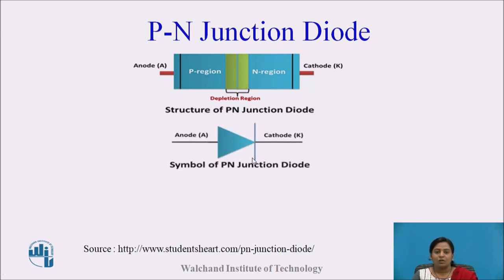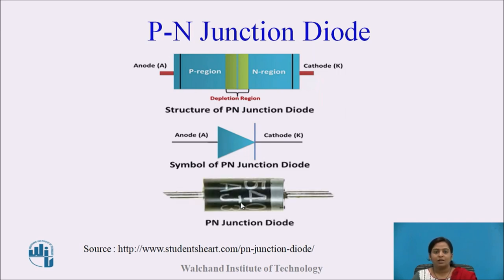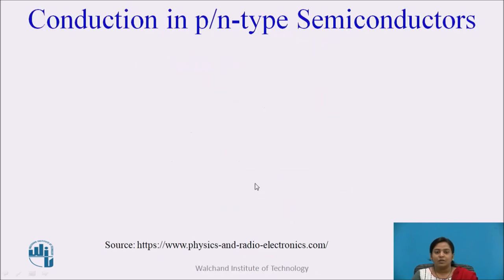This is the symbolic representation of the P-N junction diode. The arrowhead represents the direction of conventional current flowing through the device. This bar represents the cathode. And this is the real appearance of the P-N junction diode. Current conduction takes place due to the two types of semiconductor material, that is the P-type and N-type.